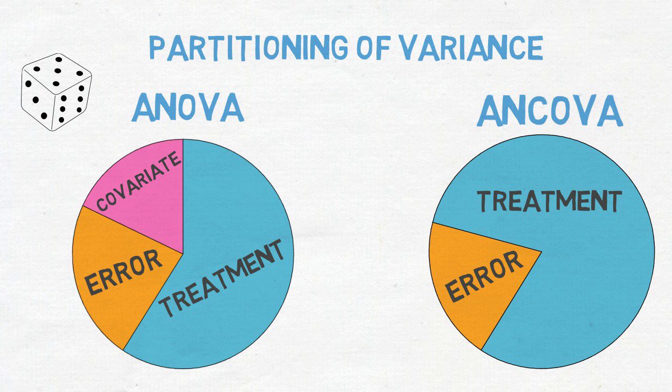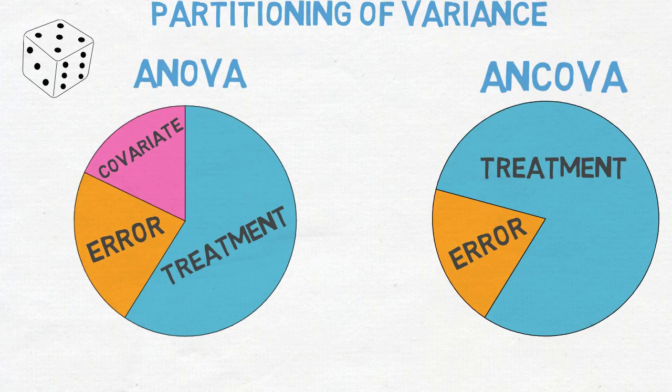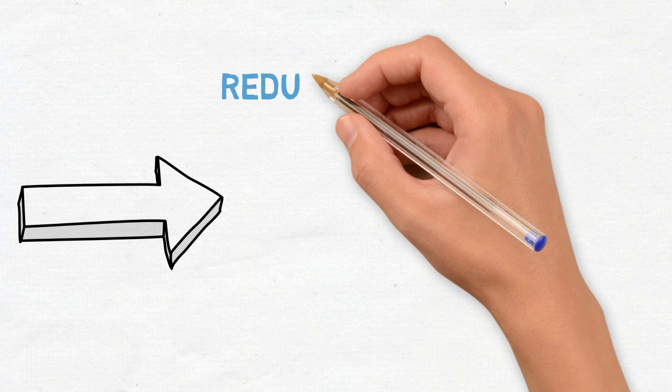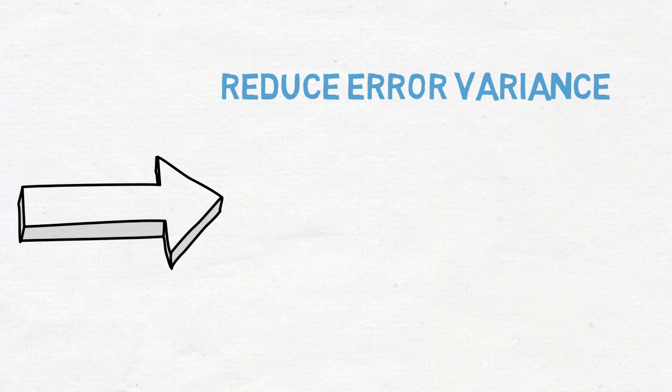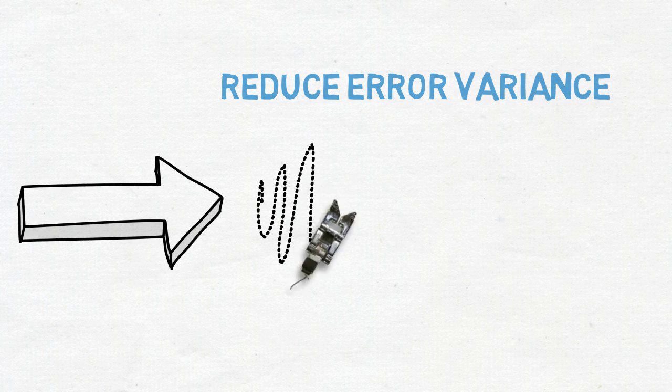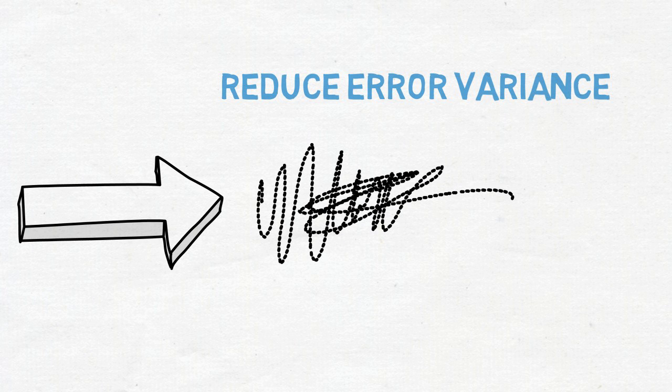The more one can shrink the error variance, the more likely one is to see the true effect have a large F-value and the more likely it is that one is able to reject the null hypothesis. There are two main reasons to include covariates in the analysis. One is to reduce error variance. In an ANCOVA, we aim to compare the amount of variance in the data that can be explained versus the amount of variance that cannot be explained, or the error variance. The less error there is, the more likely one is to detect the treatment effect.